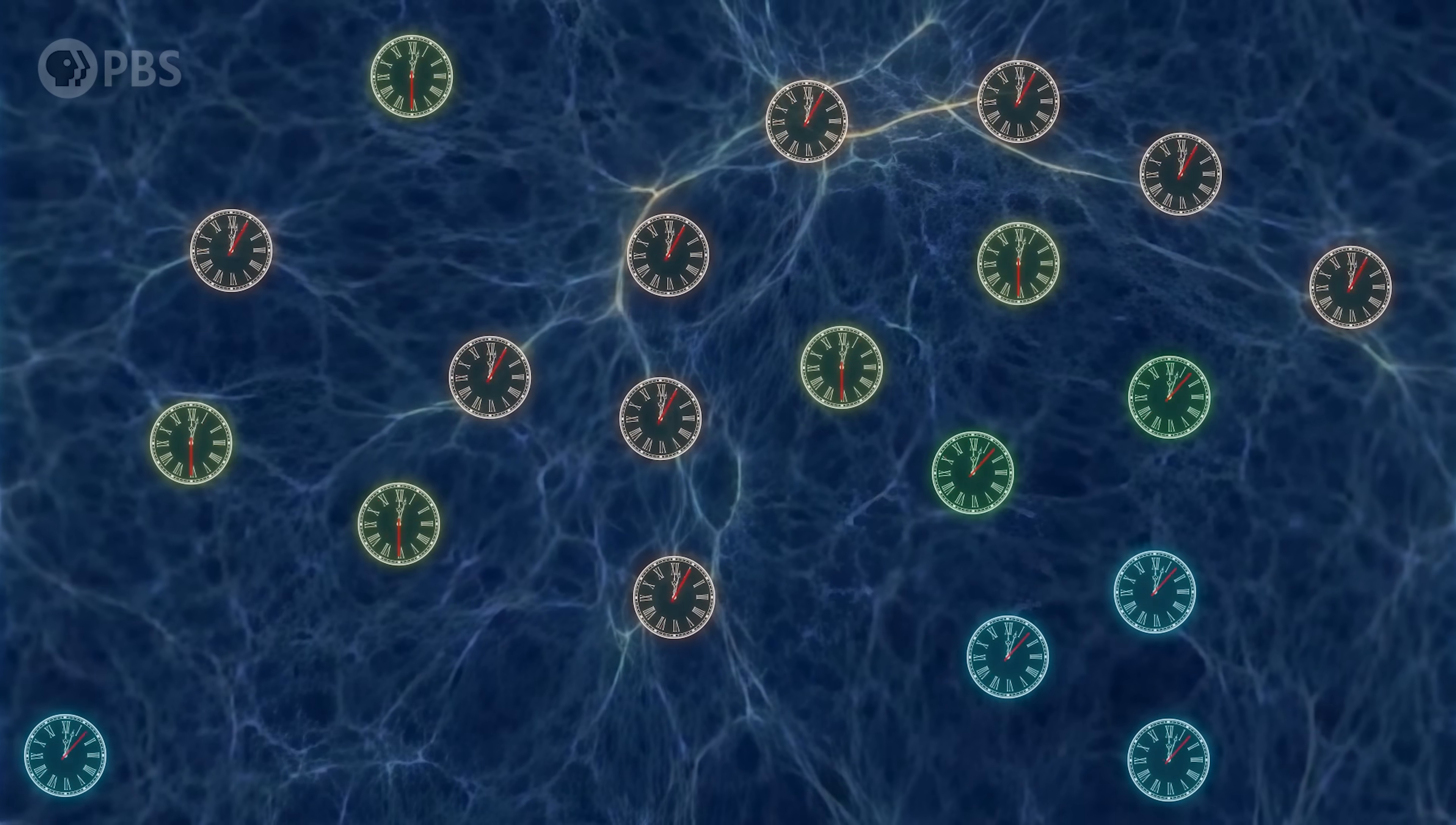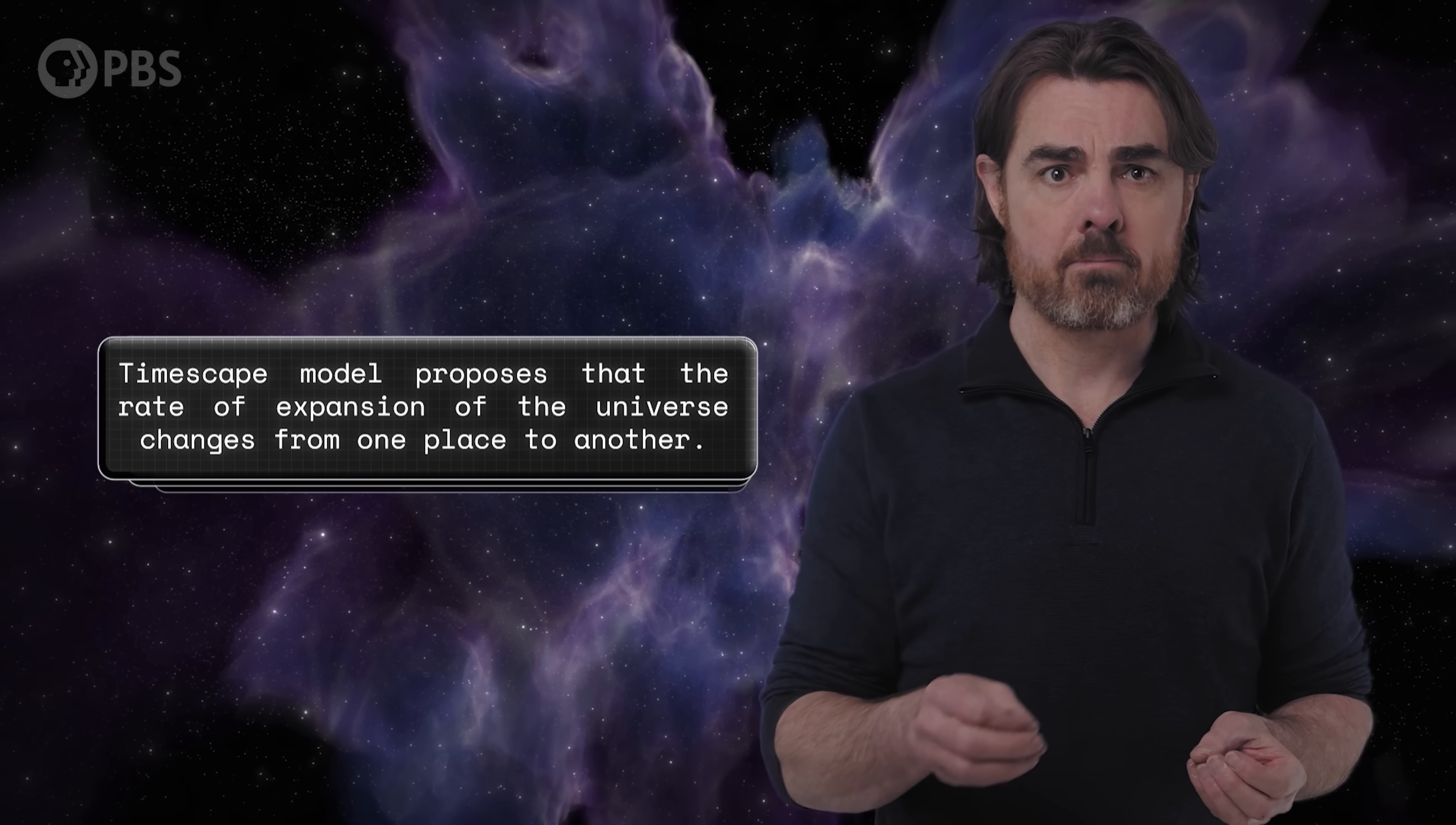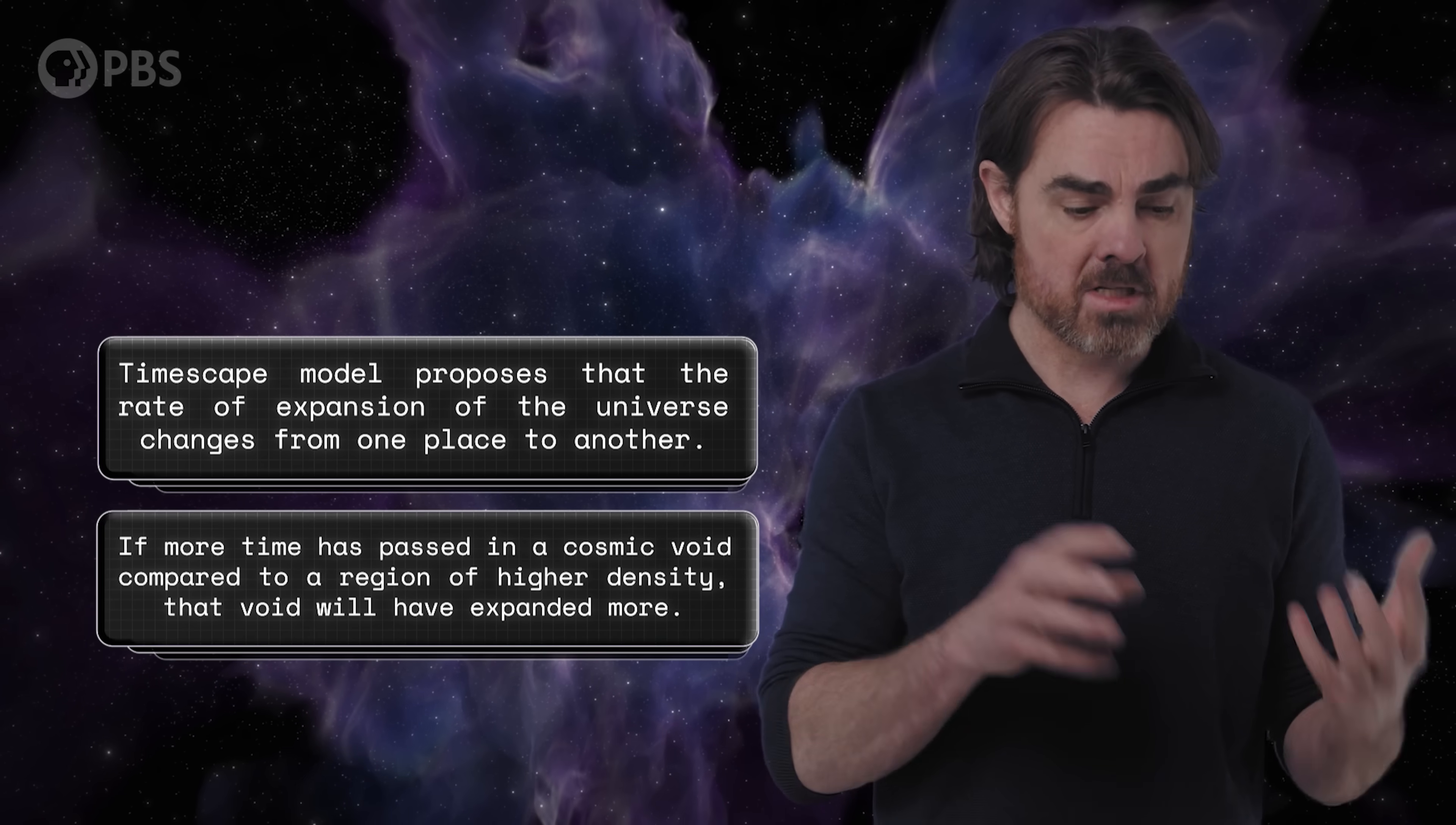Like I said at the start of this video, time flows slower in regions of high gravity and faster in low gravity. This gravitational time dilation is a known and well-tested feature of general relativity. But the timescape model proposes that differences in the time flow should have another effect. They should change the rate of expansion of the universe from one place to another. It's straightforward enough. The more time that passes, the bigger the universe gets. So if more time has passed in a cosmic void compared to a region of higher density, that void will have expanded more.